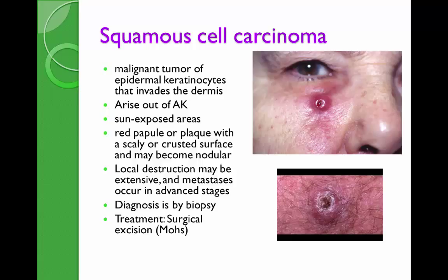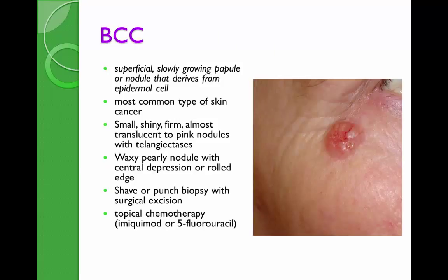The Mohs procedure involves removing the lesion and analyzing the borders microscopically — the surgeon continues excising until two centimeters of healthy skin margins are confirmed under the microscope. The patient remains in the clinic until clear margins are achieved. Mohs has the greatest benefit. Without Mohs, the specimen is sent to pathology and the patient must return in one to two weeks for results.